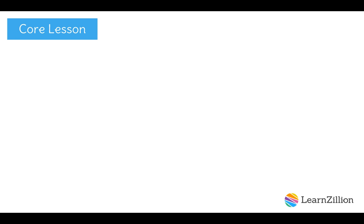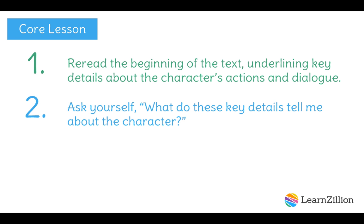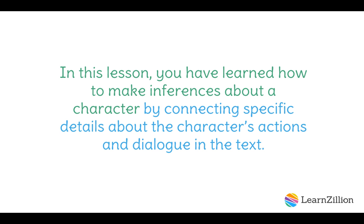Let's review the steps that we took to explore the author's initial portrayal of Rabbit. Step 1: Reread the beginning of the text, underlining key details about the character's actions and dialogue. Step 2: Ask yourself, what do these key details tell me about the character? Step 3: Jot down how these details connect to make a supported inference about the character. In this lesson, you have learned how to make inferences about a character by connecting specific details about the character's actions and dialogue in the text.